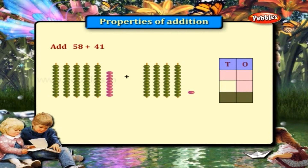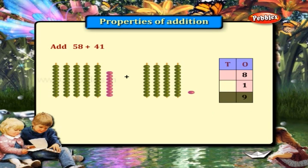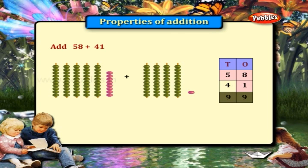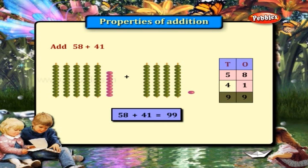Let us add 58 plus 41. The numbers in the ones place are 8 and 1. 8 plus 1 is equal to 9. We write 9 in the ones place. 5 and 4 are in the tens place, so 5 plus 4 is equal to 9. We write 9 in the tens place. So the answer is 58 plus 41 is equal to 99.